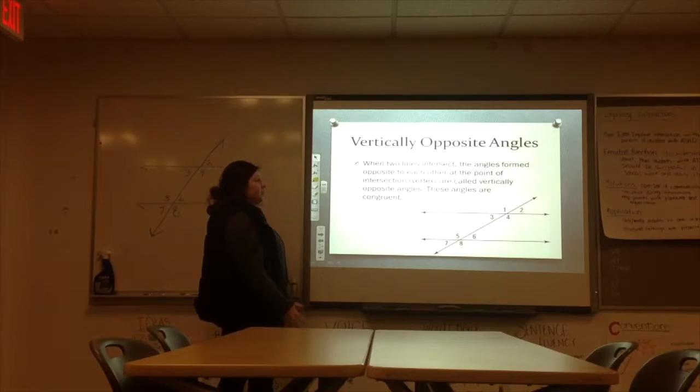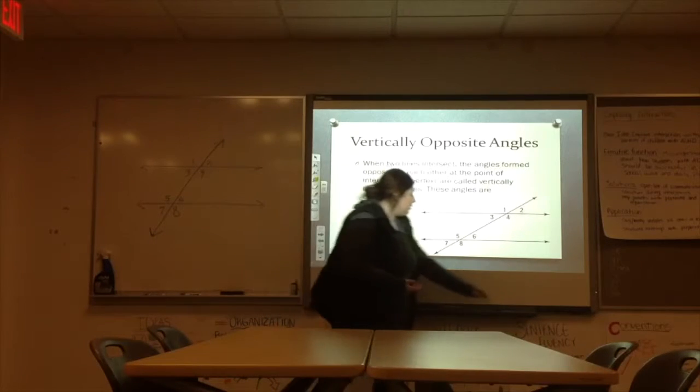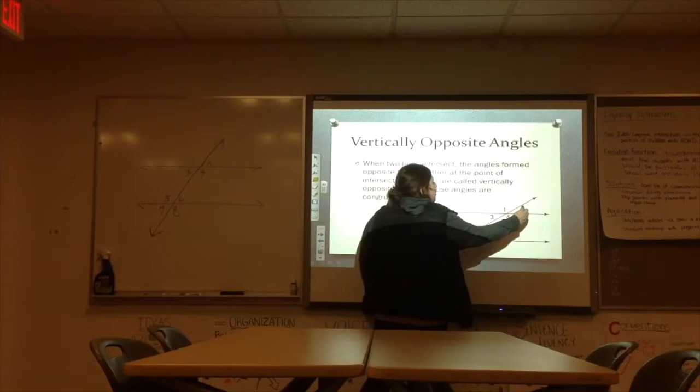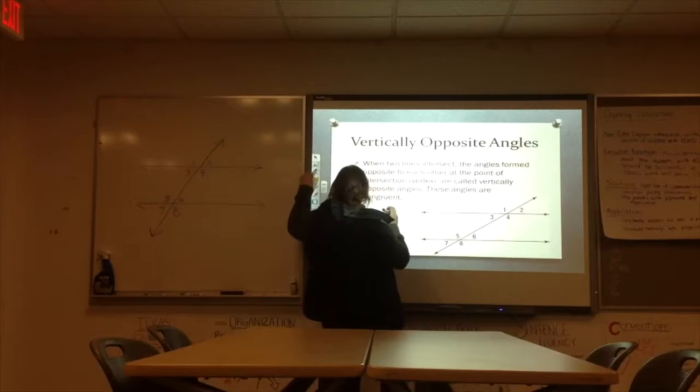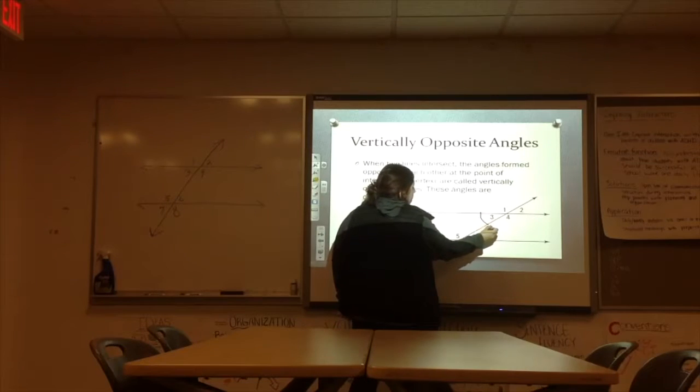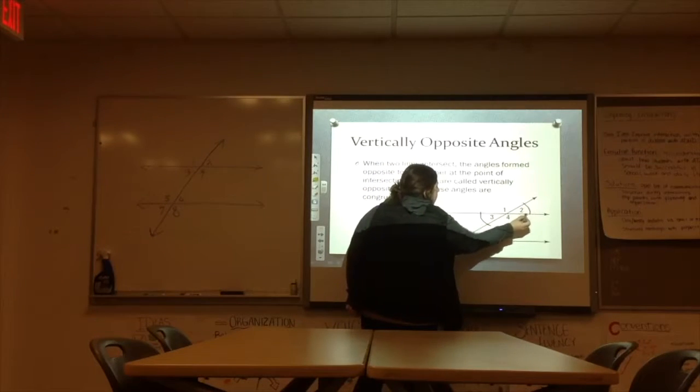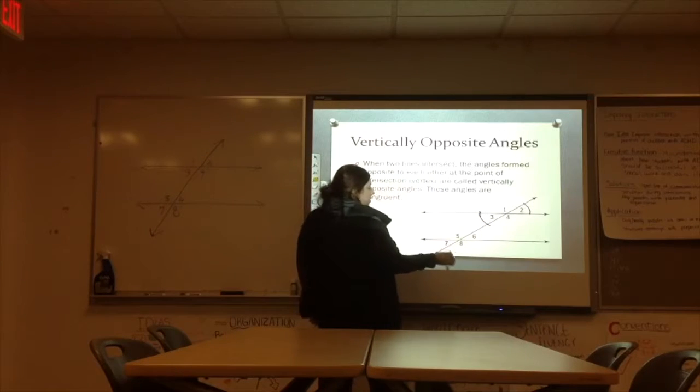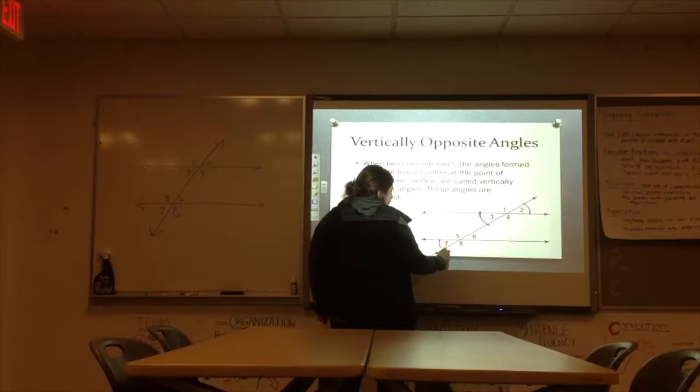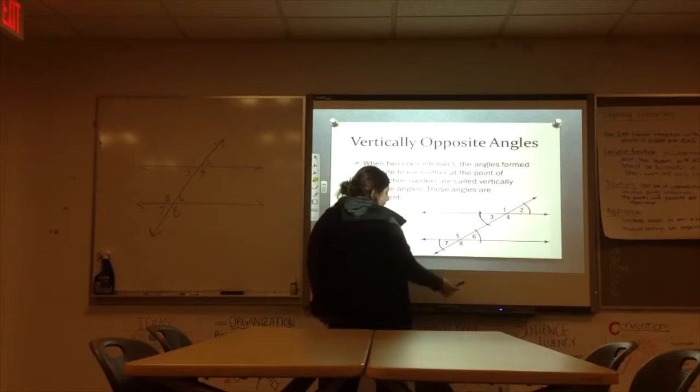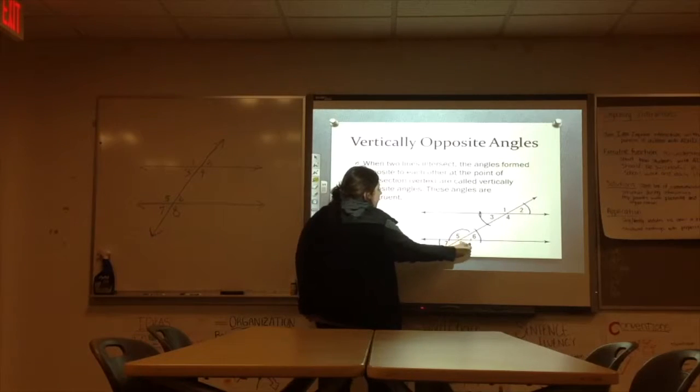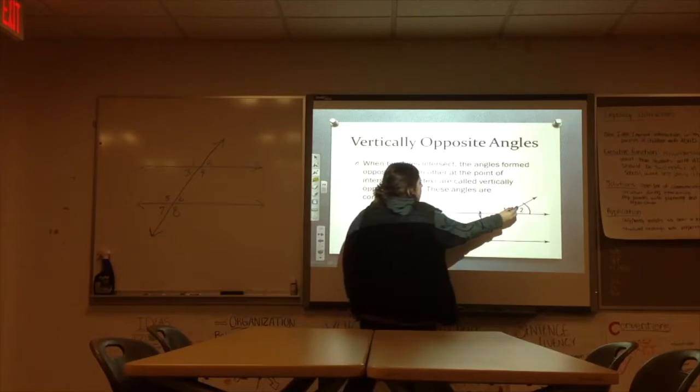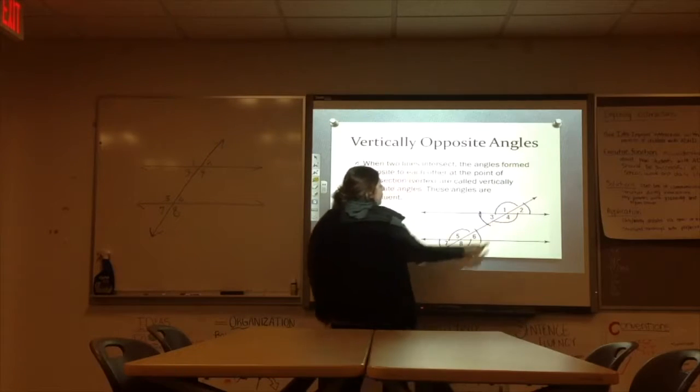So where they form opposite to each other at the vertex, this is where we have our vertically opposite angles. So it's going to look like angles 2 and 3. And 3 and 2 are vertically opposite of each other. 6 and 7. And then we can also go the other way and have angles 5 and 8. And 1 and 4.